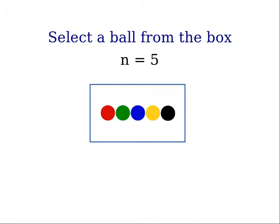As a first example, let's say we have a box with five colored balls: red, green, blue, yellow, and black. So we have a set of five items, and we select a ball from the box randomly.